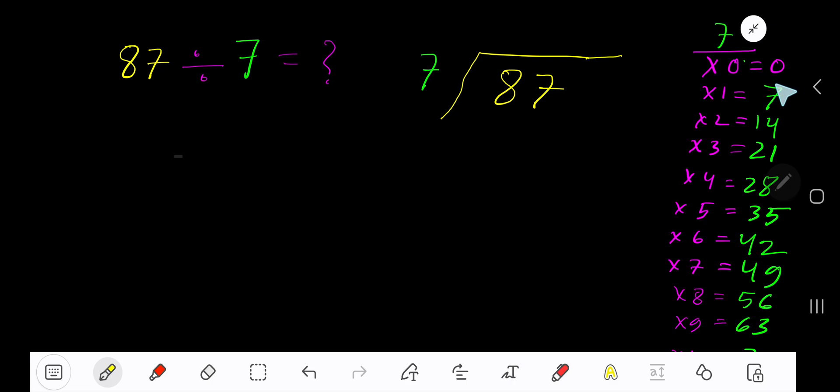To find out the multiplication table of 7, just add 7 to the previous step. 0 plus 7 is 7, 7 plus 7 is 14, 14 plus 7 is 21, 21 plus 7 is 28, 28 plus 7 is 35. This process continues. 7 goes into 8 how many times?